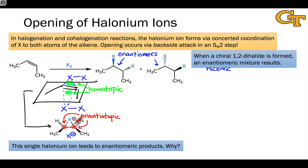The right-hand carbon is A and the left-hand carbon is B. Addition of X-minus at carbon A — substitution at carbon A — leads to this enantiomer with an inversion of configuration at this carbon on the right where addition occurred.